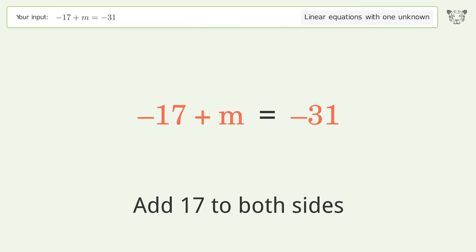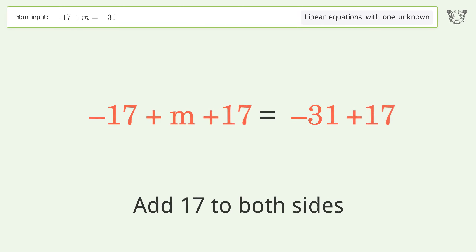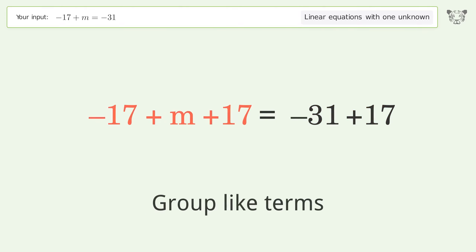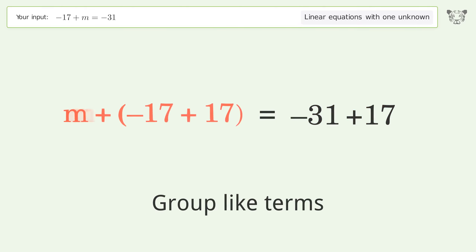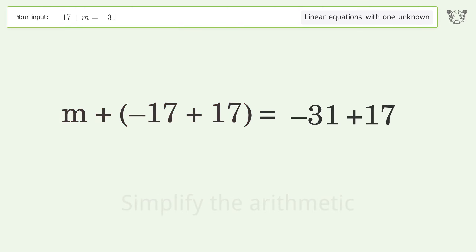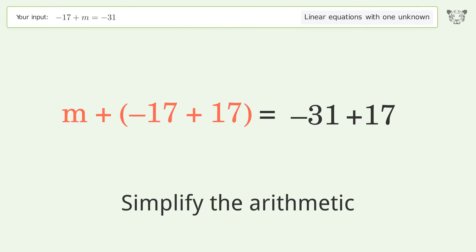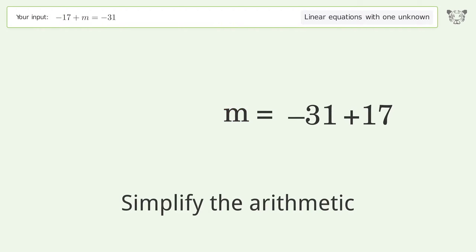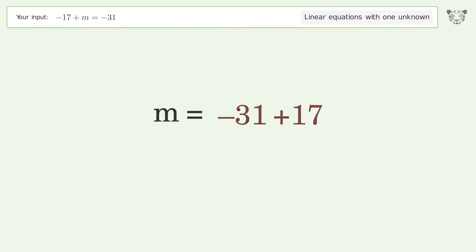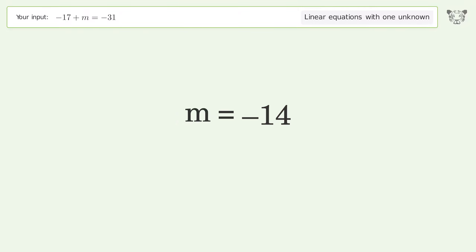Group like terms, then simplify the arithmetic. And so the final result is m equals negative 14.